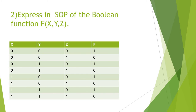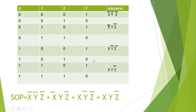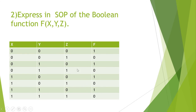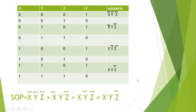Second question: express in SOP the Boolean function F(X, Y, Z) from the following truth table. In this logic system, X, Y, Z are the logical variables and F is the output function. To find the SOP, we add one more column and write the minterm for each row with output 1. There are four such cases. For the first case, the minterm is X-bar, Y-bar, Z-bar. For the next case, the minterm is X-bar, Y, Z-bar.